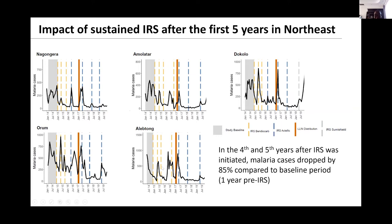Inside the axes we have different color codes. The gray bar is before the introduction of IRS in this region. The yellow cut lines show IRS with bendiocarb, given every six months. Then there was a shift in 2016 to IRS with Actellic, given once every year. In one district, Dokoro, we had IRS with SumiShield shown as the cut bar, and the orange complete bar represents a round of IRS.